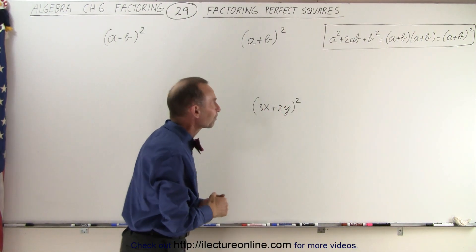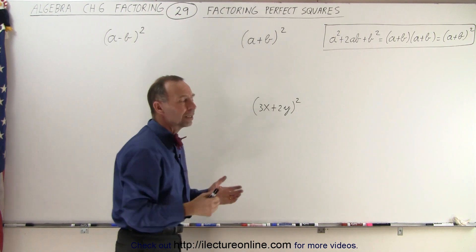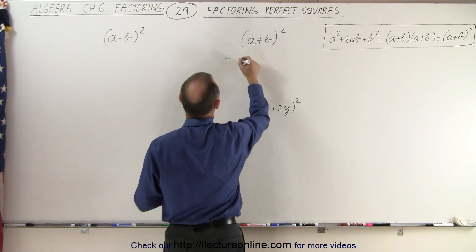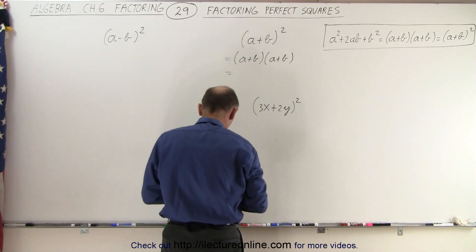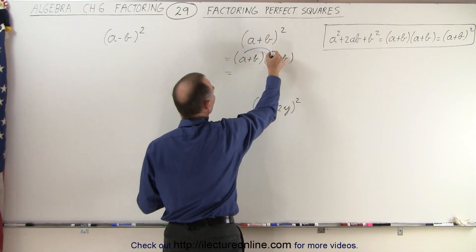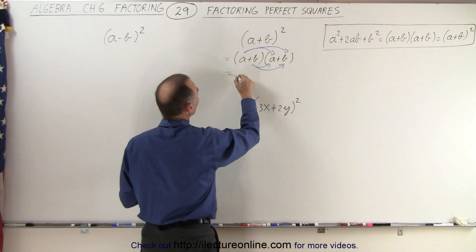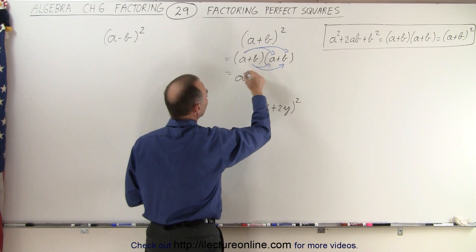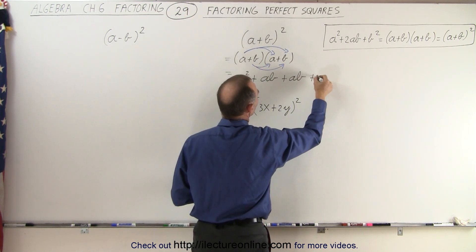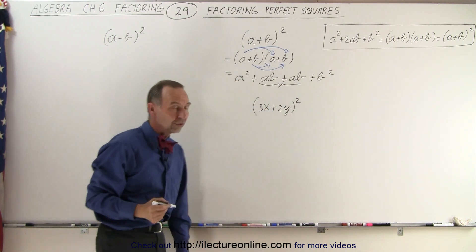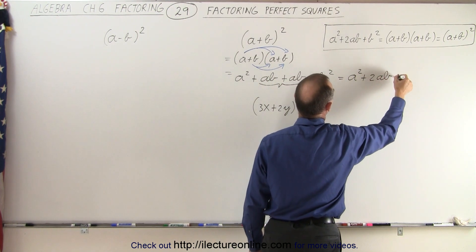But how do you recognize it as a perfect square? The way to do it is to work backwards. We have a plus b quantity squared, and we can write this as a plus b times a plus b. When we multiply, we take a times a, a times b, b times a, and b times b. This gives us a squared plus ab plus ab plus b squared. We combine the two middle terms, and this can therefore be written as a squared plus 2ab plus b squared.